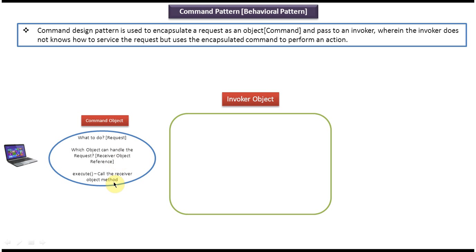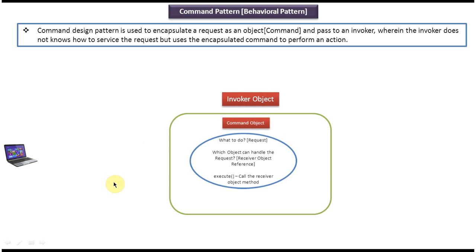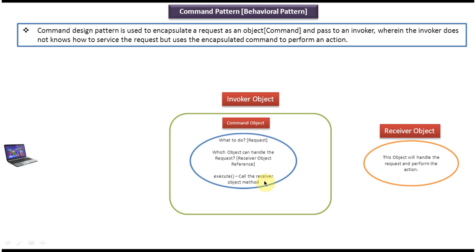As per the Command design pattern, the command object will be passed to the invoker. The invoker doesn't know how to handle the request, so it will just call the execute method of the command object. The execute method will in turn call the receiver object's method, which will handle the request, perform some action, and fulfill the request.